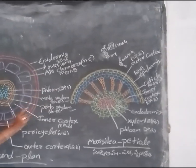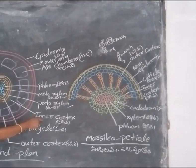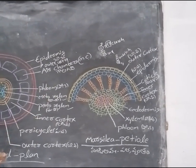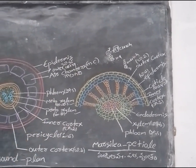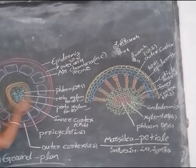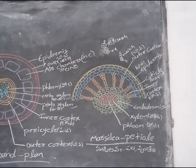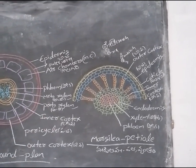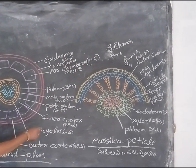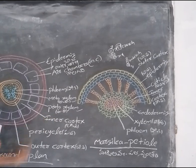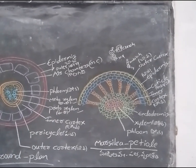The outer layer is called Epidermis, the middle one is Cortex, and the inner one is Stele. The Epidermis is a one-celled thick layer wall formation. Below the Epidermis, the Cortex is present.